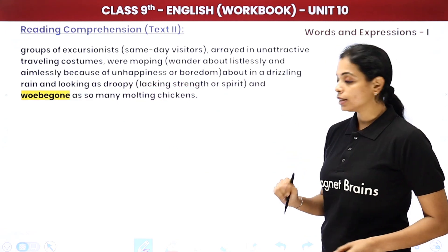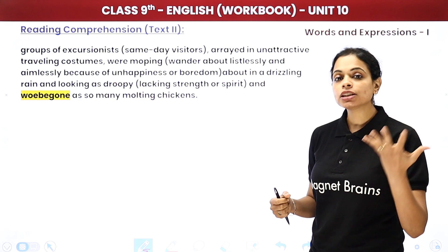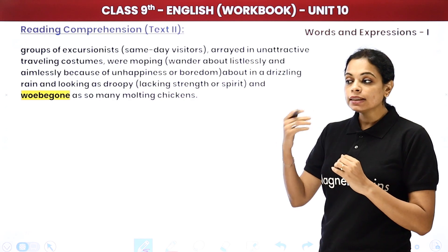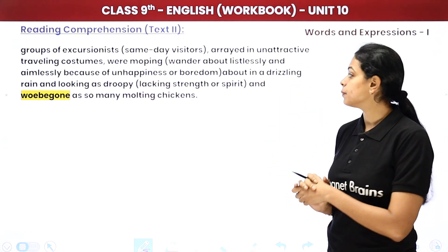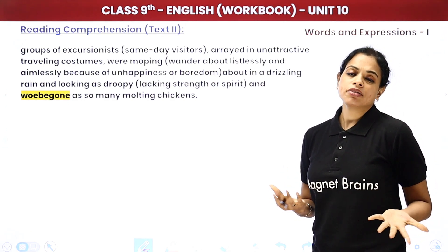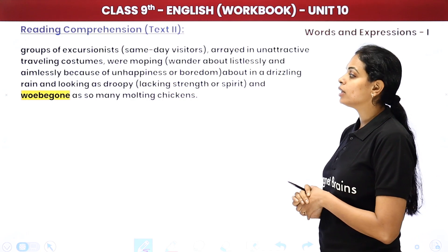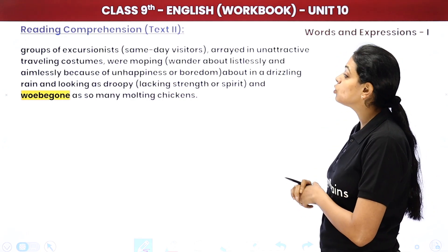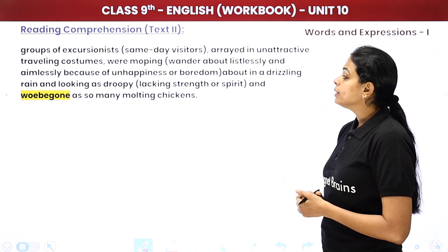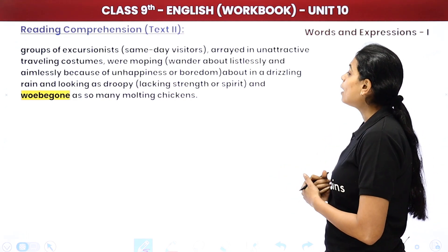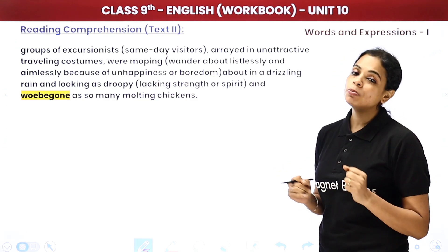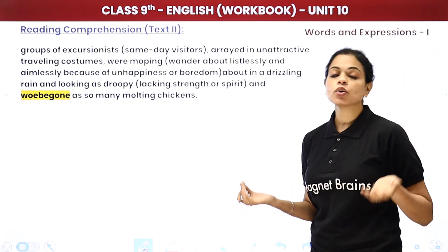A group of excursionists — tourists who visit a place for the day and return by evening without staying — were arrayed in unattractive travelling costumes. They were moping, meaning wandering aimlessly without knowing where to go, especially in their unhappy state. About in a drizzling rain, they were looking droopy — completely lacking excitement and energy.